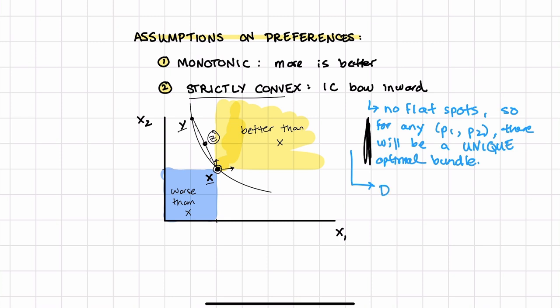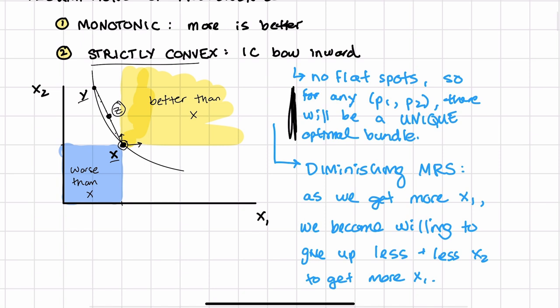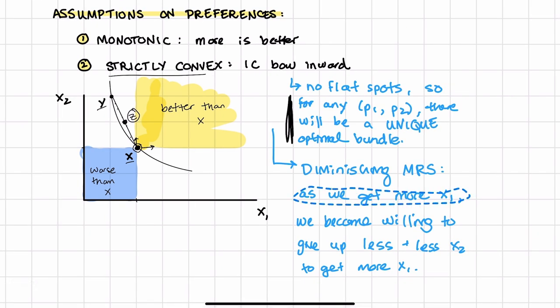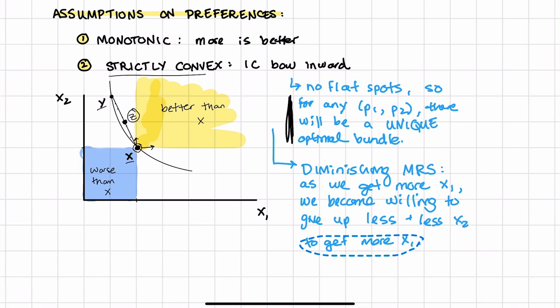Diminishing marginal rate of substitution. Which is that as we get more of a certain good, let's just say x1, as we get more of x1, we become willing to give up less and less x2 to get more x1. And that, again, just has to do with our preference for diversity. We want, we don't want extremes. With strictly convex preferences, we don't want extremes. We don't want a bunch of x1 and not much x2. We'd rather have a mix.